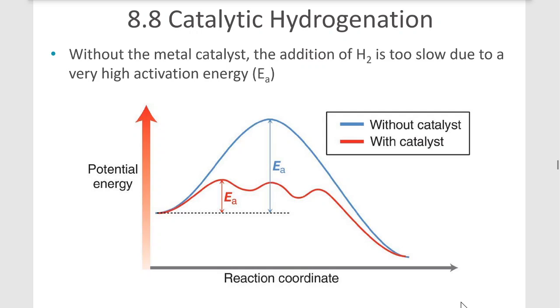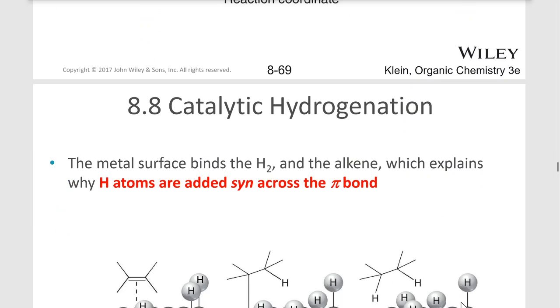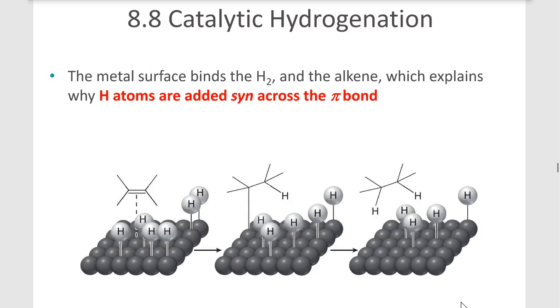We need a metal catalyst for this reaction to occur because the activation energy is too high without a catalyst. The activation energy is low enough with the catalyst that we can observe the reaction. A metal surface such as platinum, palladium, or nickel—commonly used catalysts—will bind a hydrogen molecule.